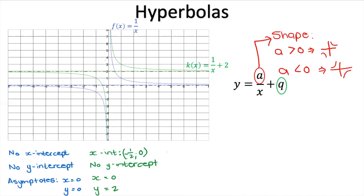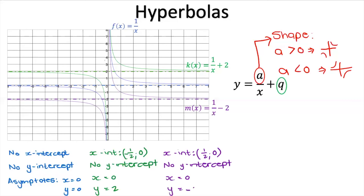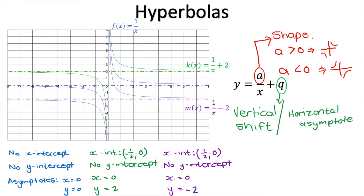What if q = negative 2? With m(x) = 1/x minus 2, we can see an x-intercept at (1/2, 0) because the graph shifted downwards. There's still no y-intercept, and one asymptote is still x = 0, but the other has become y = negative 2. So q tells us the vertical shift: when q > 0 the graph shifts up; when q < 0 the graph shifts down — and uniquely for the hyperbola, q also gives us the horizontal asymptote.